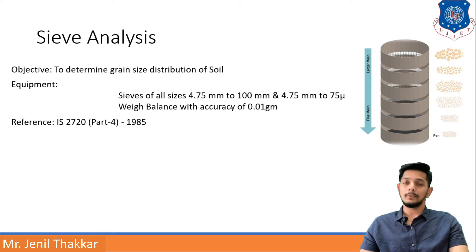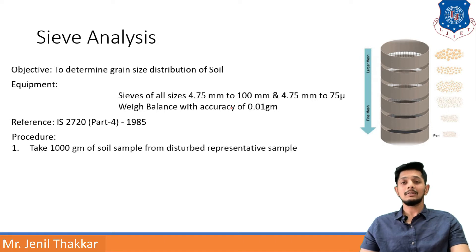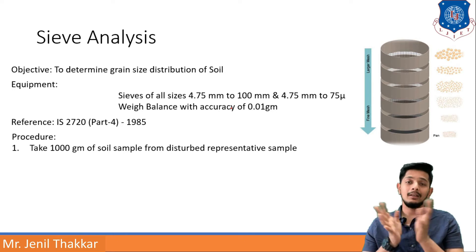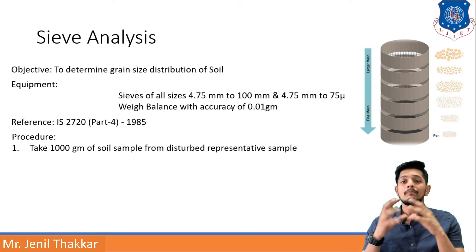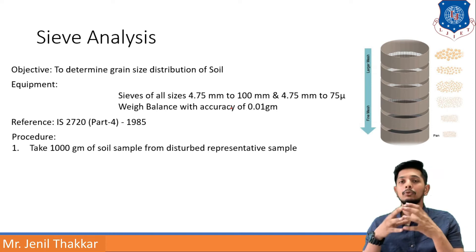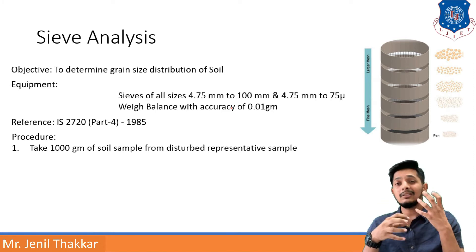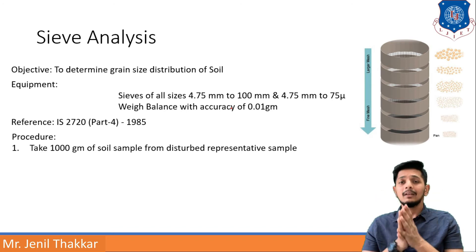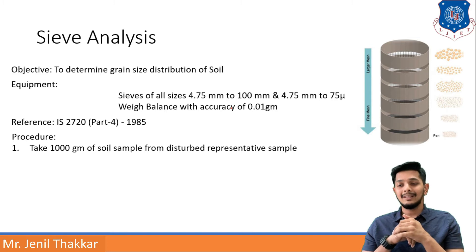The very first step for sieve analysis is to take 1000 grams of soil sample from a disturbed representative sample. Disturbed sample is when you disturb the soil structure — like you dig and remove the soil. Undisturbed sample means without disturbing any soil structure, you cut the core of that. We will take a disturbed sample here for sieve analysis, with 1000 grams of soil sample.